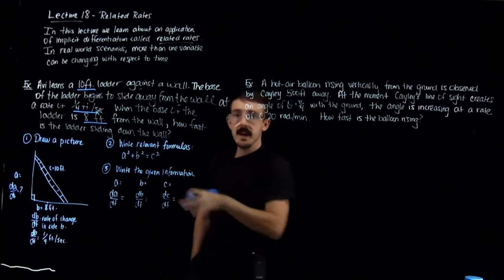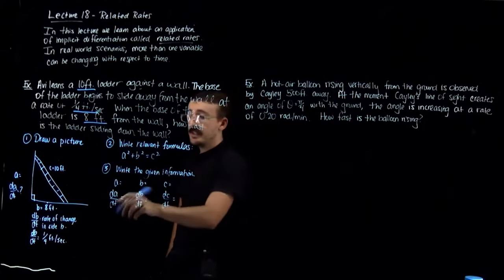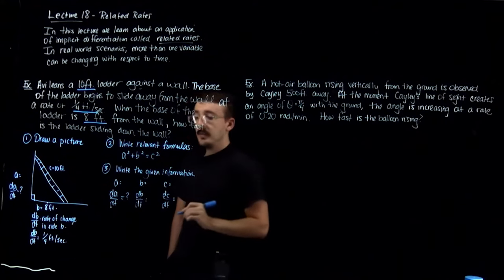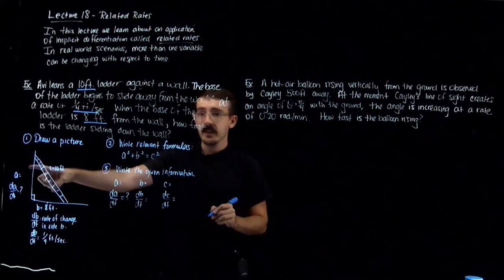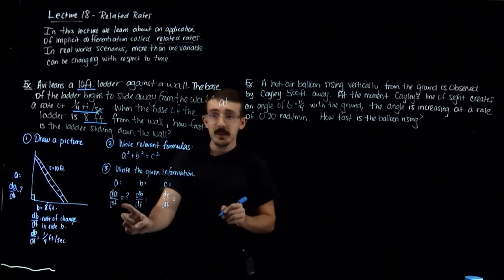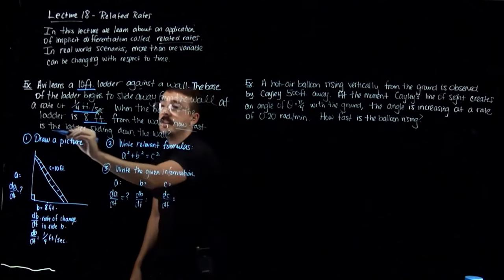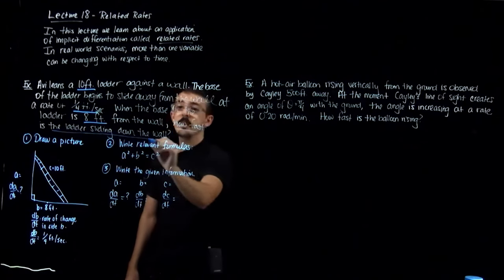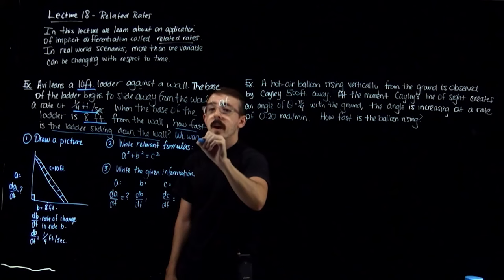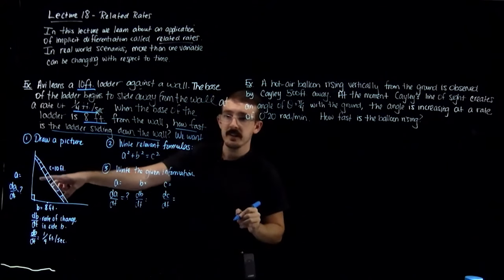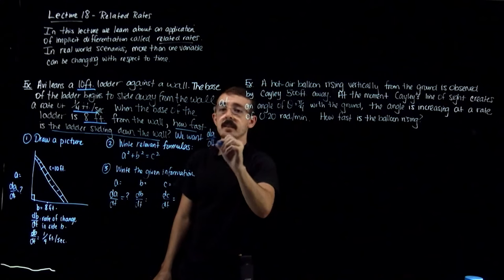I don't know da/dt — that's the rate of change of side A over time. Notice this is what the question is asking for: how fast is the ladder sliding down the wall? So da/dt is our goal. db/dt was given as one-fourth feet per second. b is given as 8, and c is given as 10.